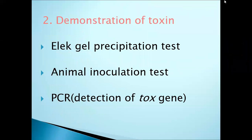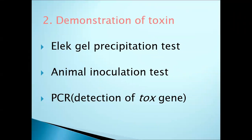For demonstration of exotoxin, we perform the following tests: (1) the Elek gel precipitation test, used to detect diphtheria toxin containing the tox gene; (2) the animal inoculation test — a positive culture of C. diphtheriae is injected into a guinea pig or rabbit, which will die within 72 hours, confirming susceptibility to diphtheria; (3) PCR, used for detection of the toxin gene.